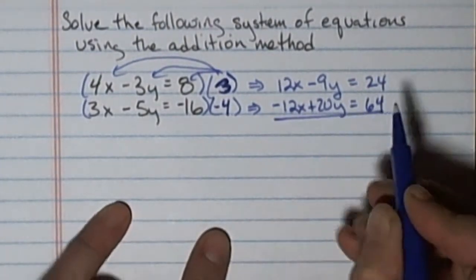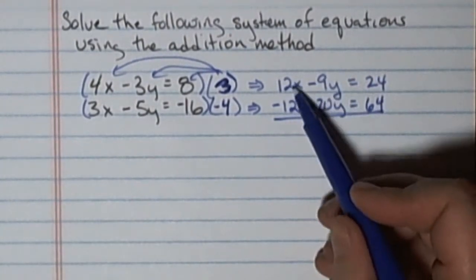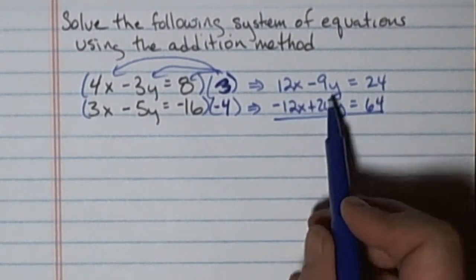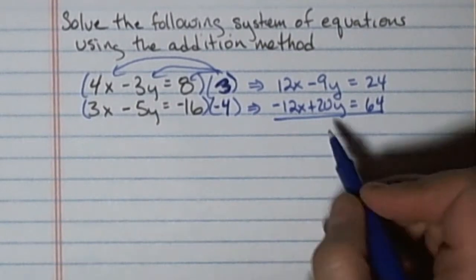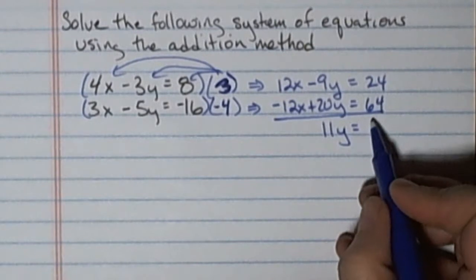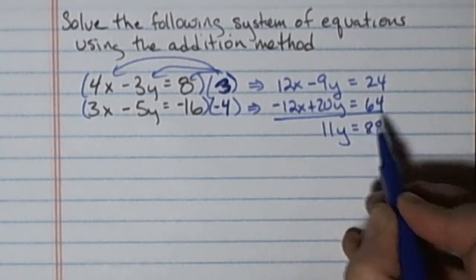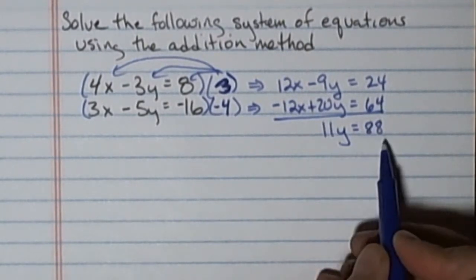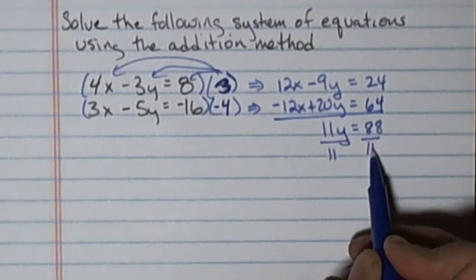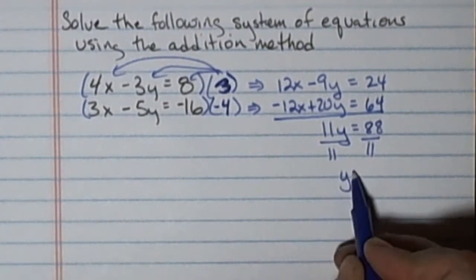At this point I have gotten to my goal of having one of my variable terms cancel out to zero. I'll have negative 9y plus 20y, which is positive 11y equals 24 plus 64 is 88. I want to solve for y, so I can divide both sides by that coefficient and I'll get y equals 8.